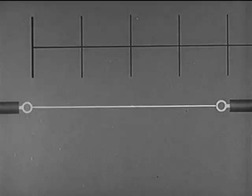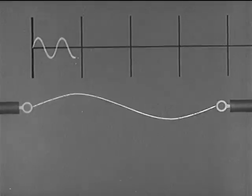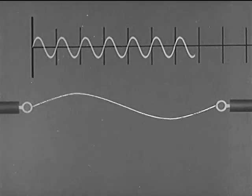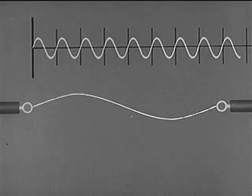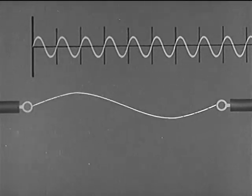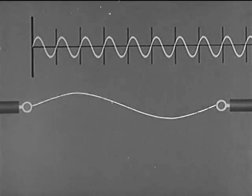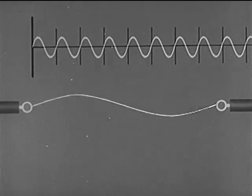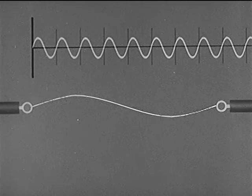If the string vibrates in two segments, it produces a wavelength that's one half that of the fundamental. This is the first overtone, which may be called the second partial. Since wavelength is inversely proportional to frequency, the frequency of the first overtone is twice that of the fundamental.